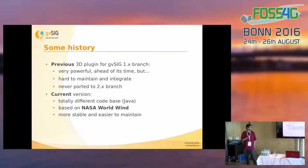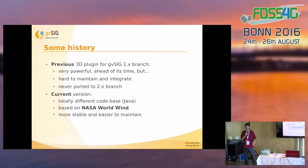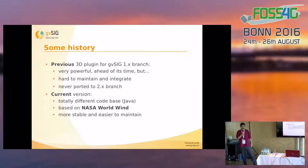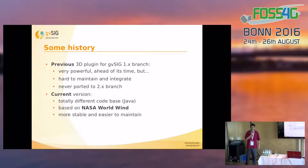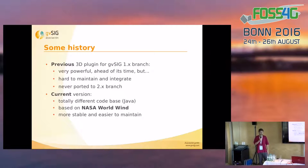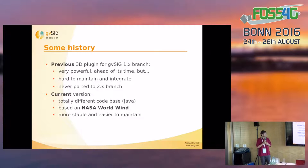Regarding some history, in the 1.x branch of gvSIG we already had a 3D plugin. It was very powerful, but at the time the technology was not ready enough to make it work well on Java. There was a lot of native code mixed with Java that we had to maintain ourselves, and it was a very big effort. So we never ported it to the new 2.x branch. For that branch we chose to integrate an existing Java library — NASA WorldWind — which is much easier for us to maintain. It already has an active community behind it.